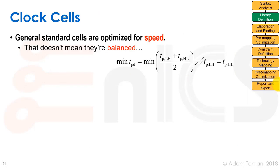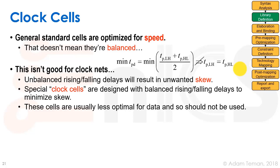Clock cells are another important category. Standard cells are optimized for speed, but that doesn't mean they're balanced. Propagation delay tpd is typically defined as the average of low-to-high and high-to-low transitions; minimizing it involves a specific beta ratio between pull-up and pull-down, but that doesn't guarantee equality between the two transitions. Clock cells are specially designed with balanced rising and falling delays — balanced in both tpLH/tpHL and in trise/tfall at the outputs.